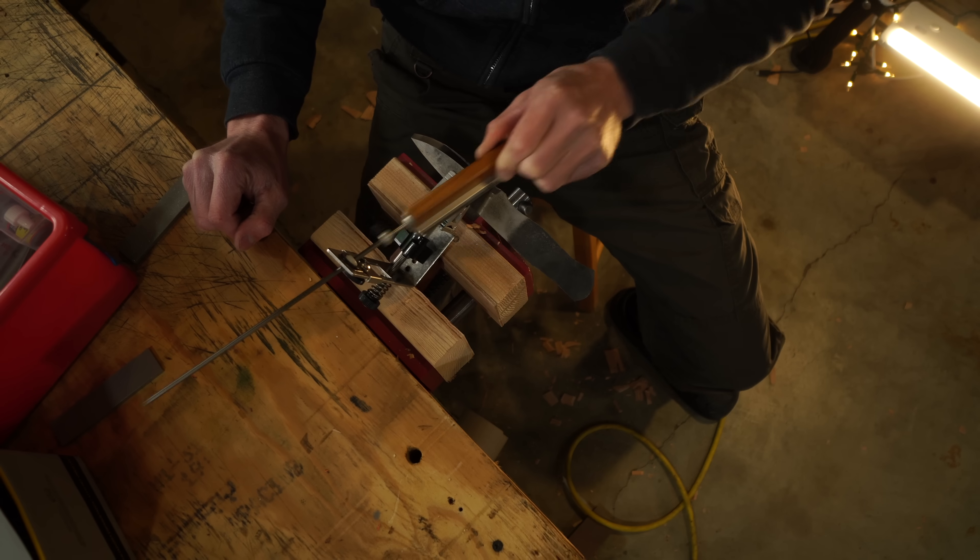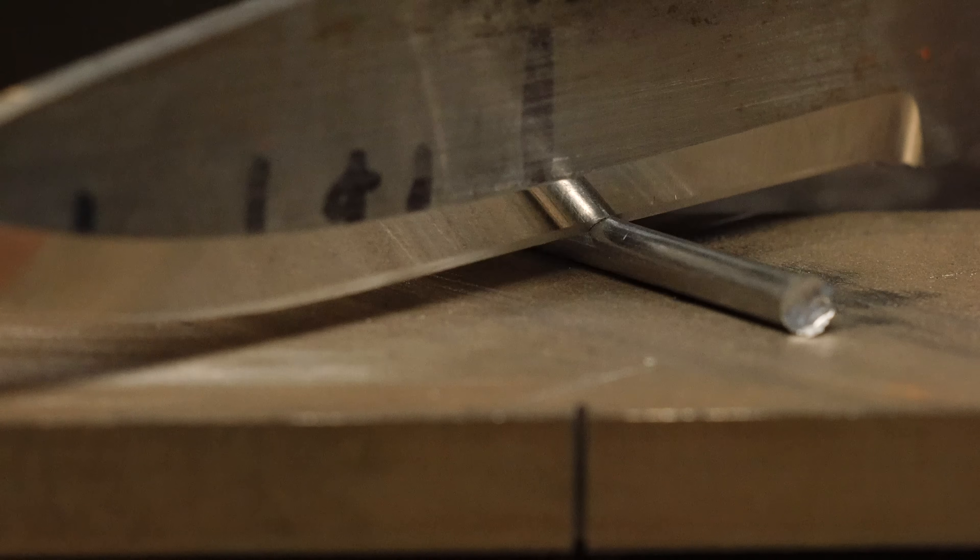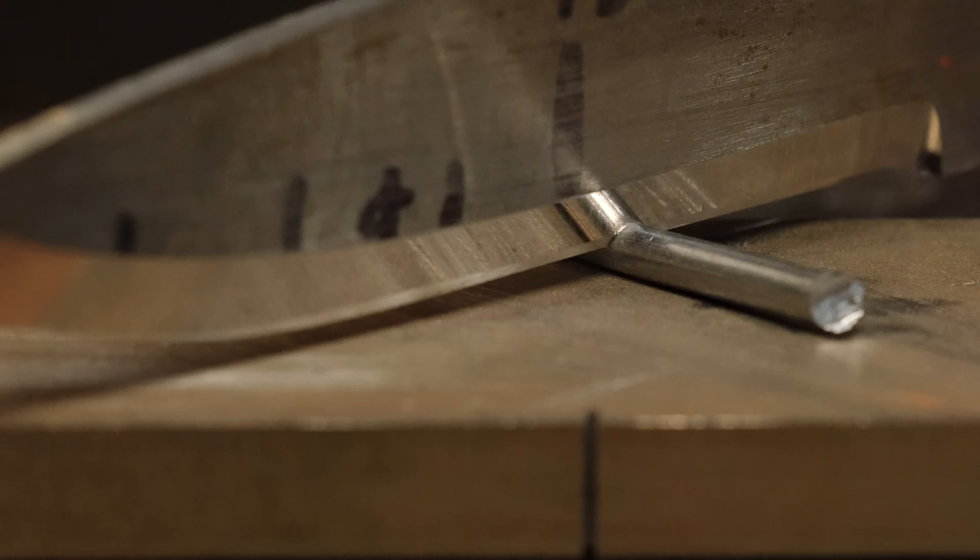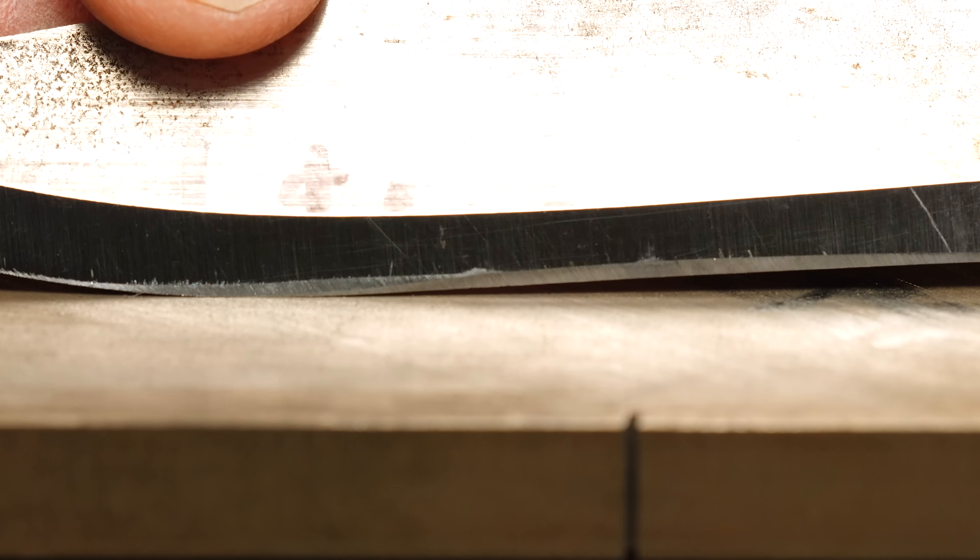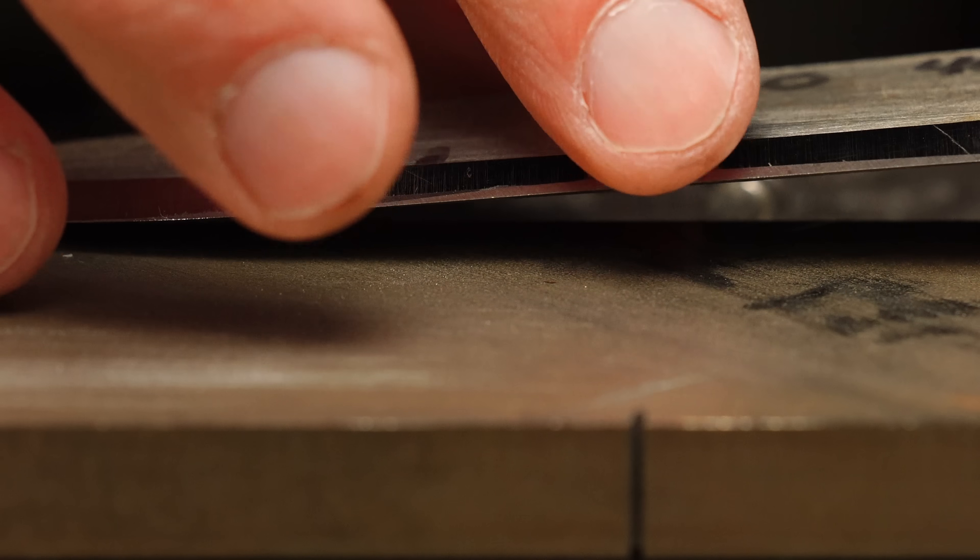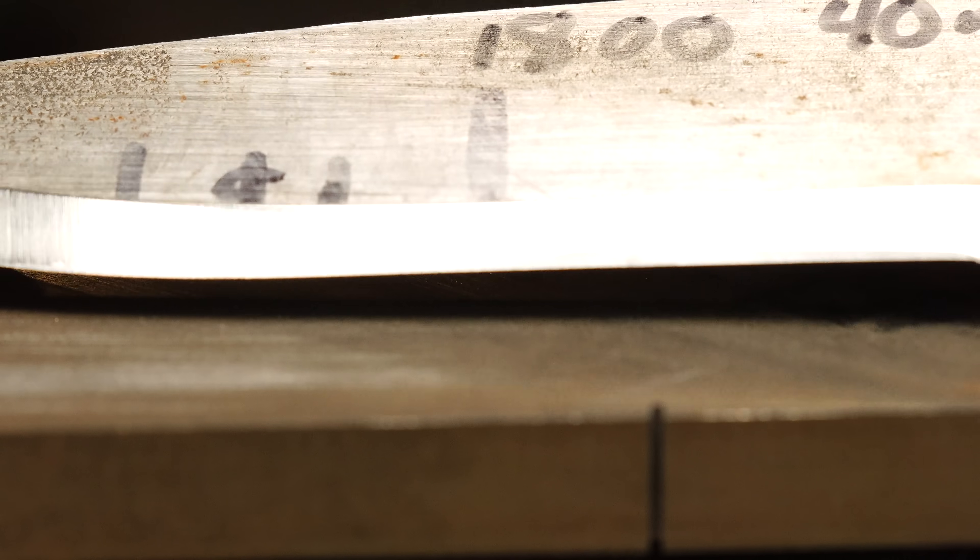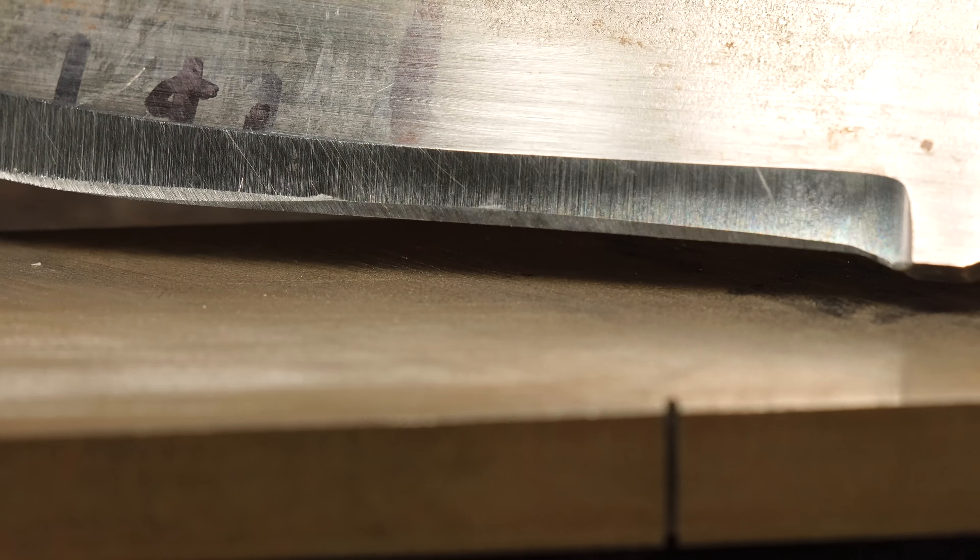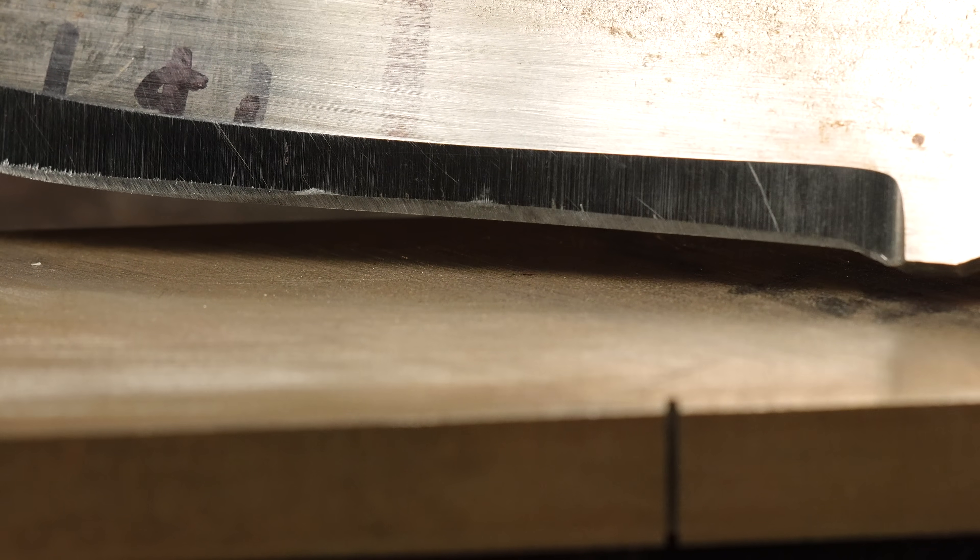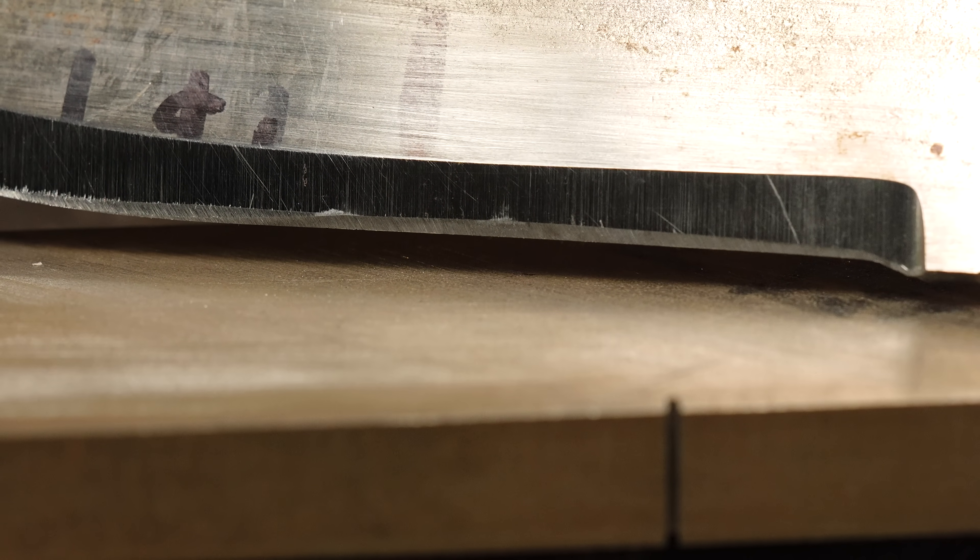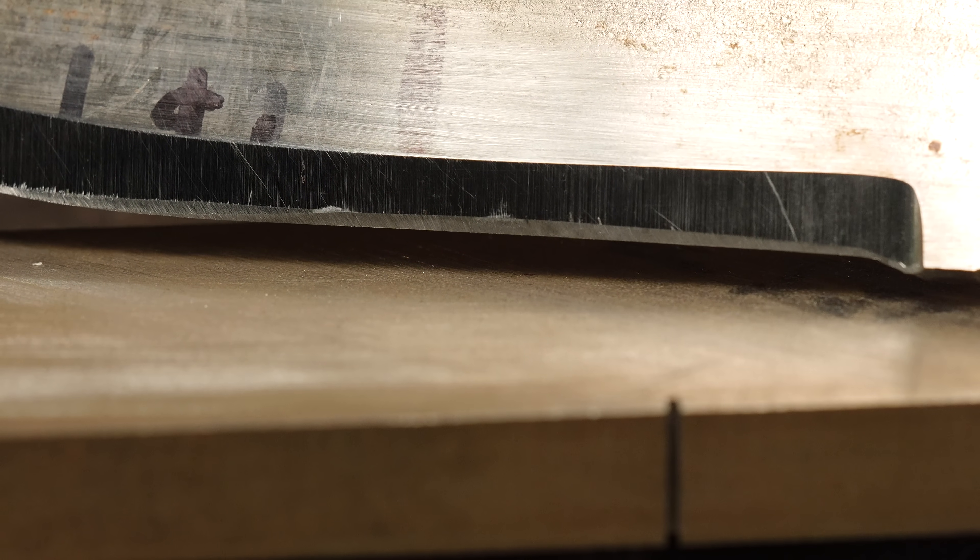Check that out. There's like zero edge damage. This is like one of the worst heat treatments that you can possibly get on a knife. 1084 soaked at 1800 plus degrees for 40 minutes. And you can chop it through a nail with the correct geometry.